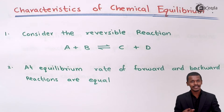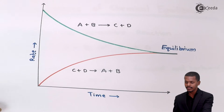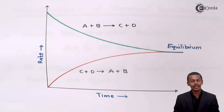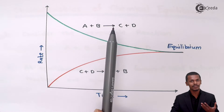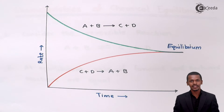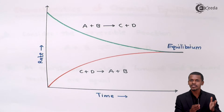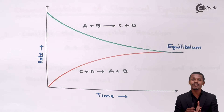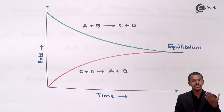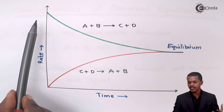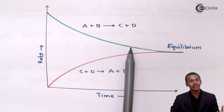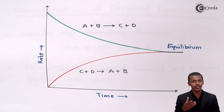For example, if A plus B is giving us C plus D — the forward reaction — as the concentration of reactants A plus B decreases over time, the rate of the forward reaction depends on reactant concentration, so it goes on decreasing. There is a fall in the rate of reaction.